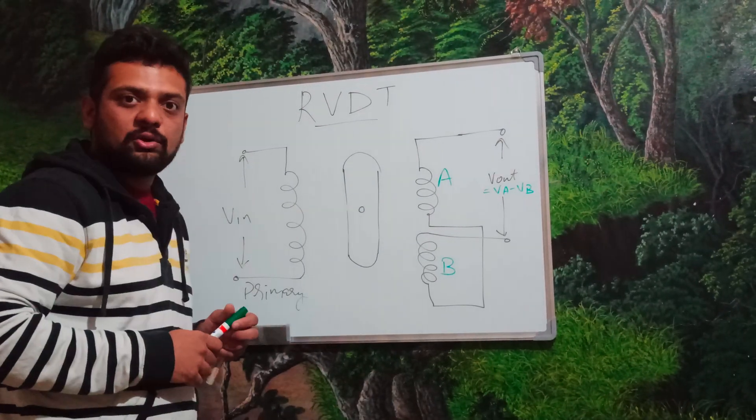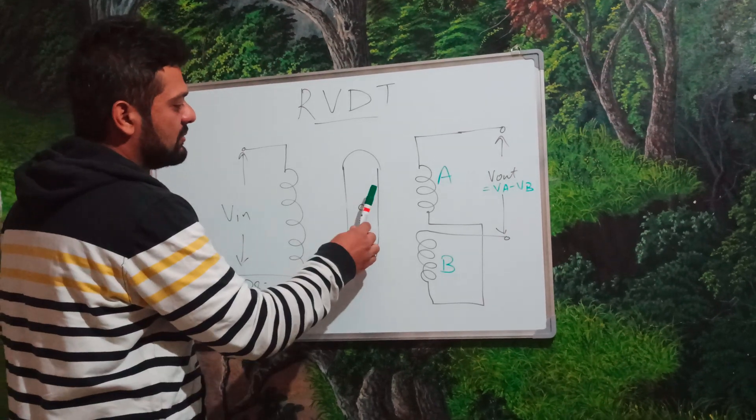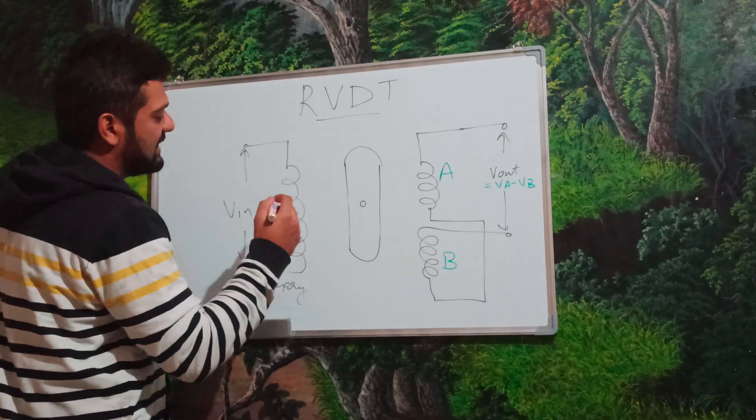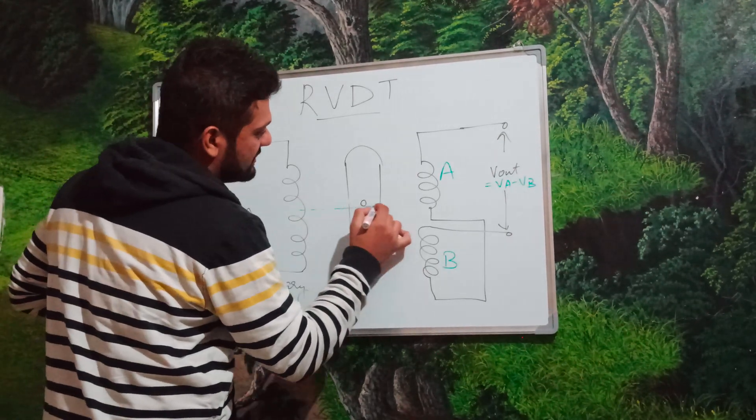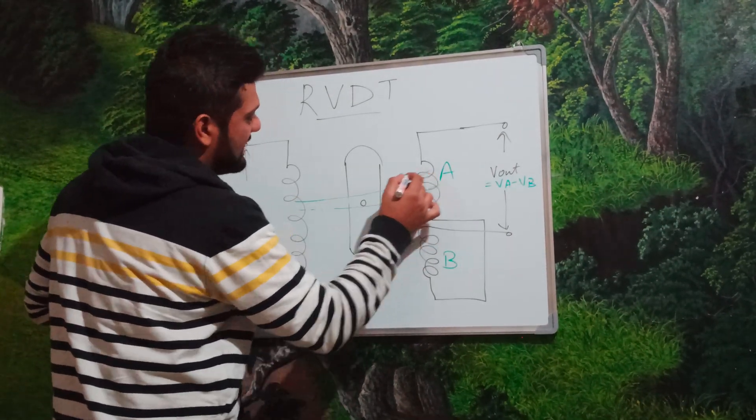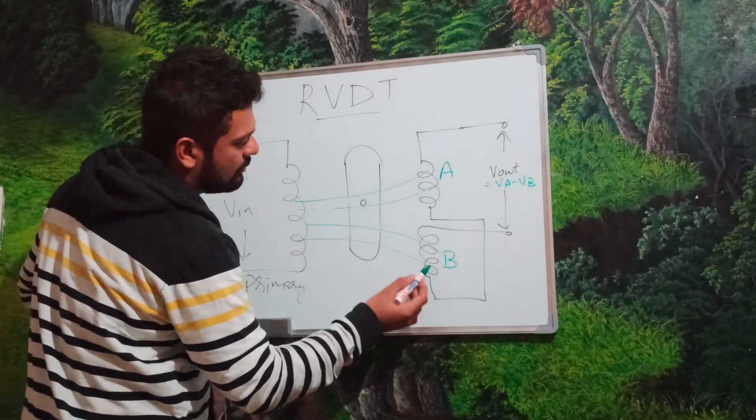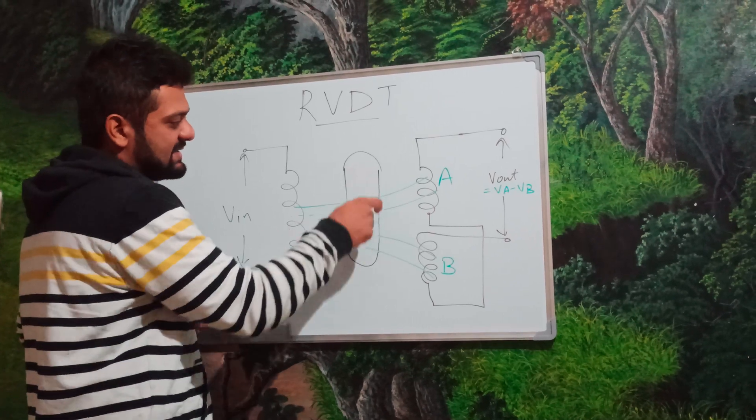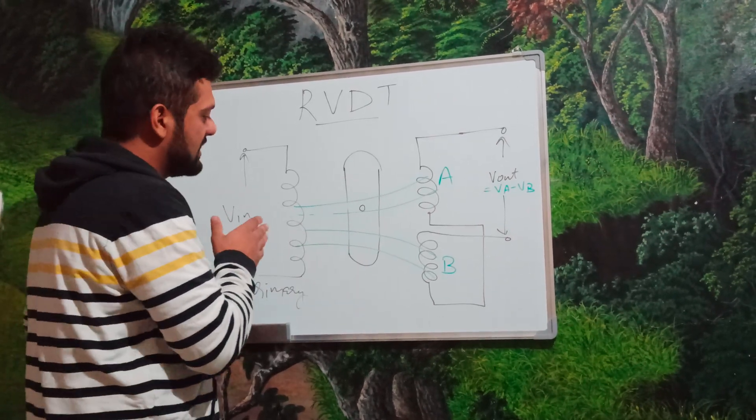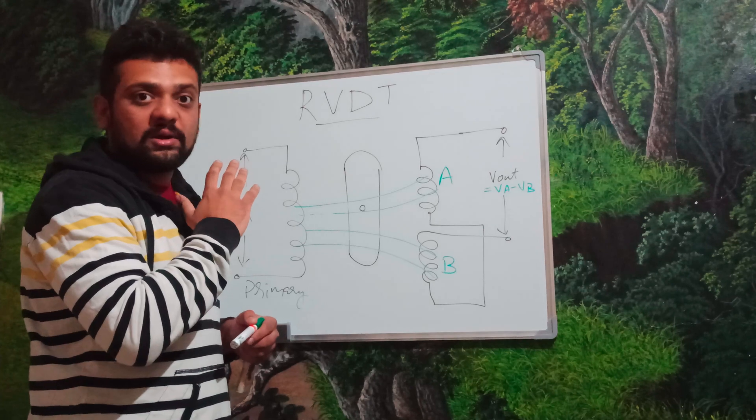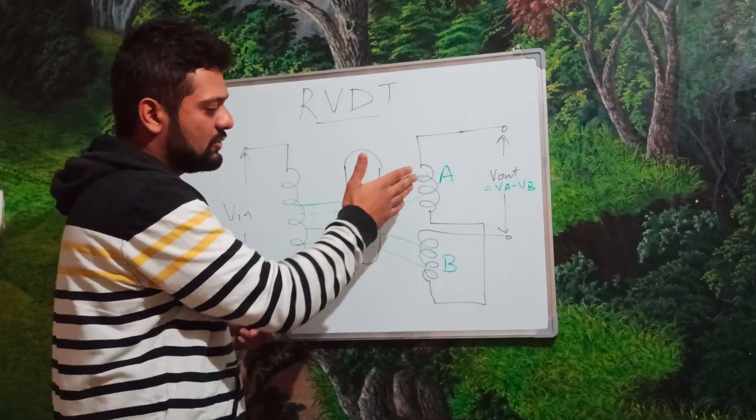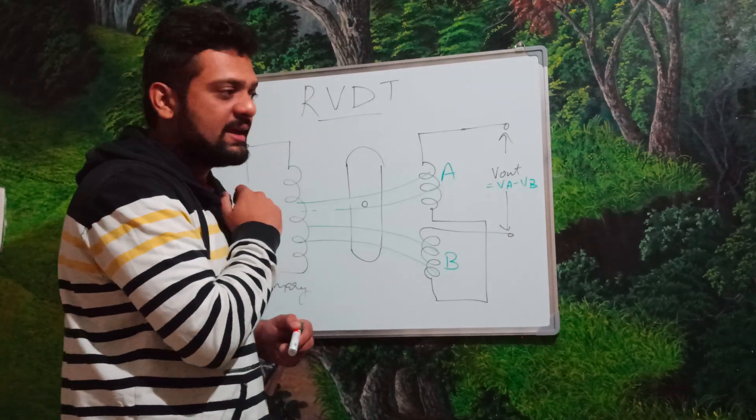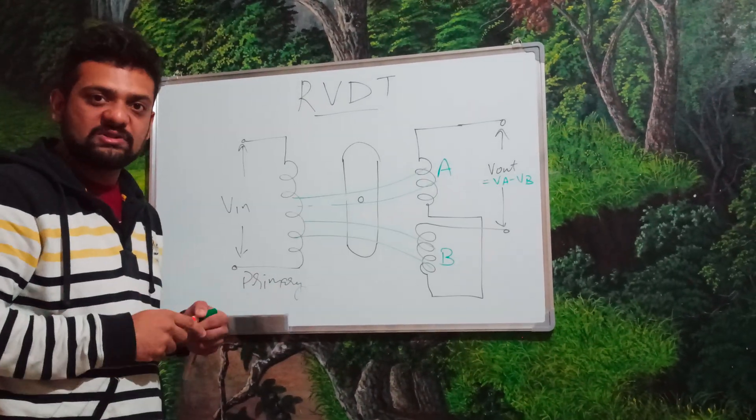Till the time this is at a neutral position, that is, we are not moving it at any degree or any angle either anti-clockwise or clockwise, till that time, the magnetic flux which is generated by this primary coil will be linking with both A and B equally. Because this is in a neutral position and the magnetic flux is linking equally with coil A and coil B, giving us similar V A and V B. In this case, there would be no voltage on the output side.